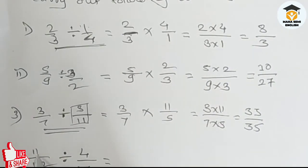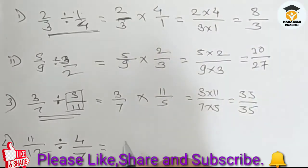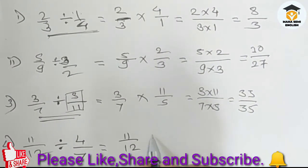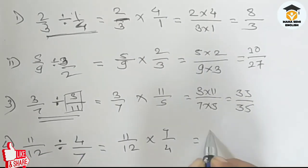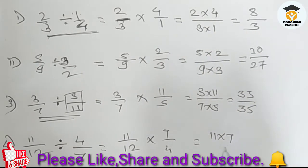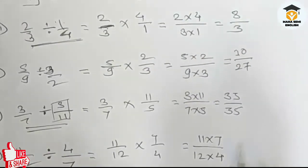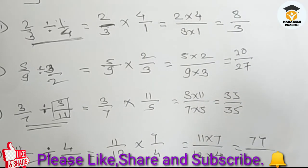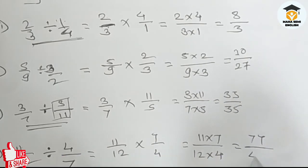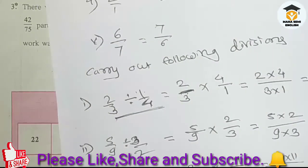Last question: 11 upon 12 divided by 4 upon 7 equals 11 upon 12 multiplied by 7 upon 4, which equals 11 into 7 divided by 12 into 4. Eleven into seven is seventy-seven and twelve into four is forty-eight. This is the division of this term.